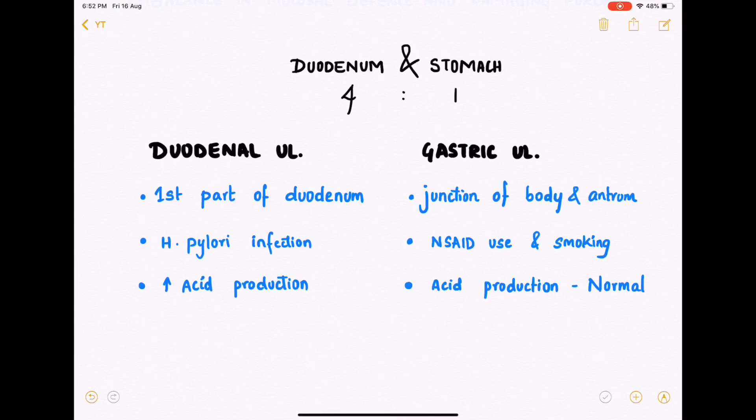That necessitates us to differentiate between duodenal ulcers and gastric ulcers. Duodenal ulcer is commonly seen in the first part of the duodenum, while gastric ulcer is seen at the junction of the body and the antrum, more commonly on the lesser curvature.